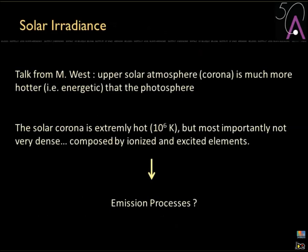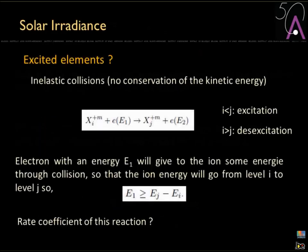The corona is very poorly dense and is composed only of ionized and excited elements. So how do we go from this statement to the emission processes? We have ions, and not only ions — also excited particles. We just have to take into account an ion which will be excited.